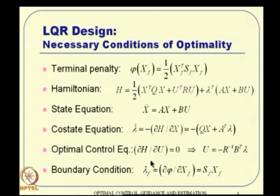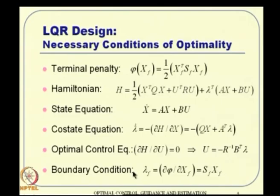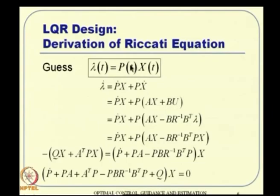The boundary condition gives lambda_f = del phi / del X_f = S_f X_f. Motivated by this — at t = T_f, lambda is a linear function of X_f — we assume lambda(t) = P(t) X(t) at every point in time, where P(t) is a time-varying matrix. The linear dependency varies with time but the linear relationship holds at every point.